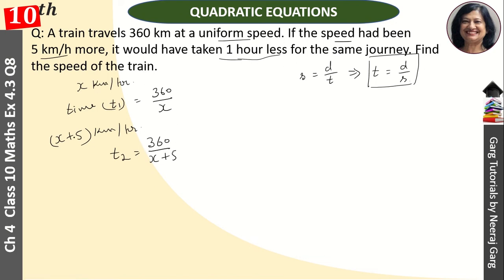Time difference is equal to 1. So, t1 minus t2 equals 1. That is 360 upon x minus 360 upon x plus 5, that is equal to 1.